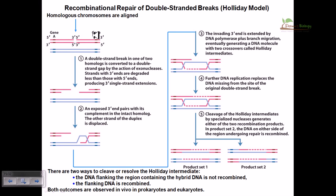We have this whole gene, but in between them we have a break. As a result of this double-stranded break, the product of this whole gene is not synthesized in a continuous way and the products can be lost. So we must access this double-stranded break and repair it to get the desired genetic product.